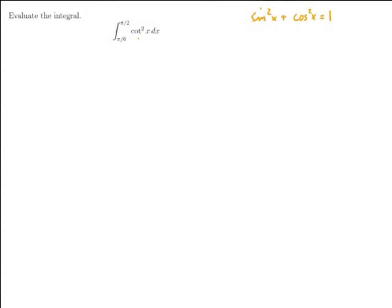We can get cotangents out of this if we divide everything through by sine, because cosine over sine is cotangent. So if we divide everything through by sine squared, I get 1 plus cotangent squared of x equals cosecant squared of x. That means cotangent squared is cosecant squared minus 1.